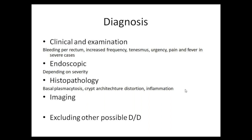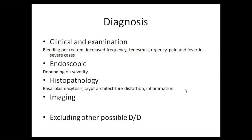On biopsy, the initial characteristic finding is basal plasmacytosis, followed by crypt architecture destruction, cryptitis, crypt abscesses, and acute inflammatory cell infiltrates in the mucosal and submucosal layers. Importantly, there will be no evidence of granulomas, which helps differentiate from Crohn's disease.